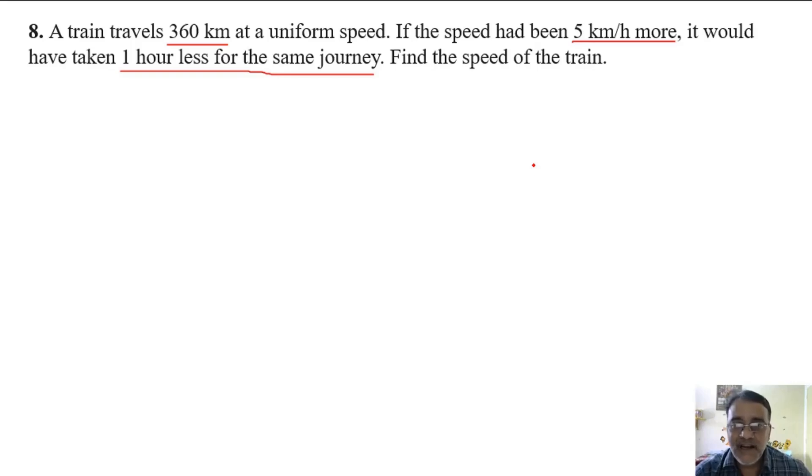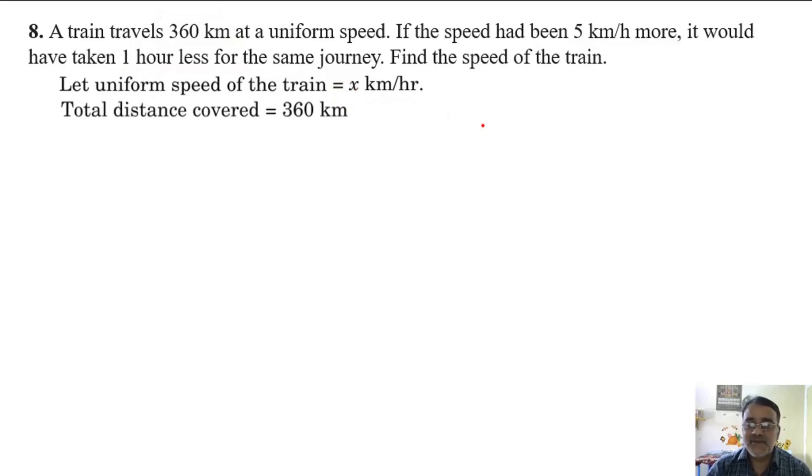Let the speed of the train be x km per hour. The distance is given 360 km. The formula for time is distance upon speed. So total distance covered is 360 km, and total time taken by the train is 360/x hour.